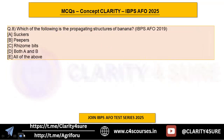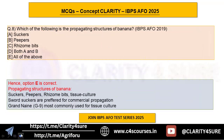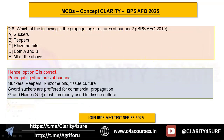Question eight: which of the following are propagating structures of banana? This is also based on an IBPS question, slightly modified. Options are suckers, peepers, rhizomes, both A and B, or all of the above. The answer is all of the above. In IBPS 2019, only suckers were given as the correct option, but suckers, peepers, rhizomes, and tissue culture are all propagating structures or techniques of banana.